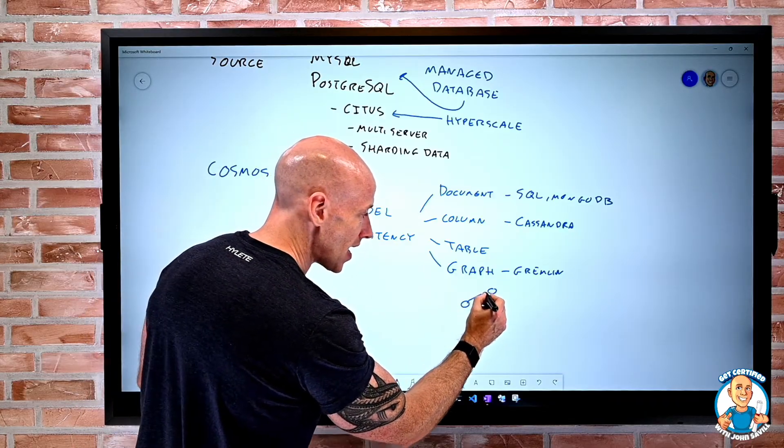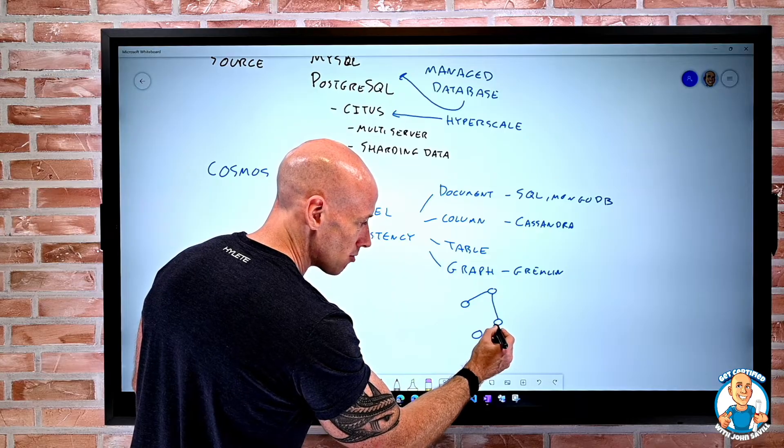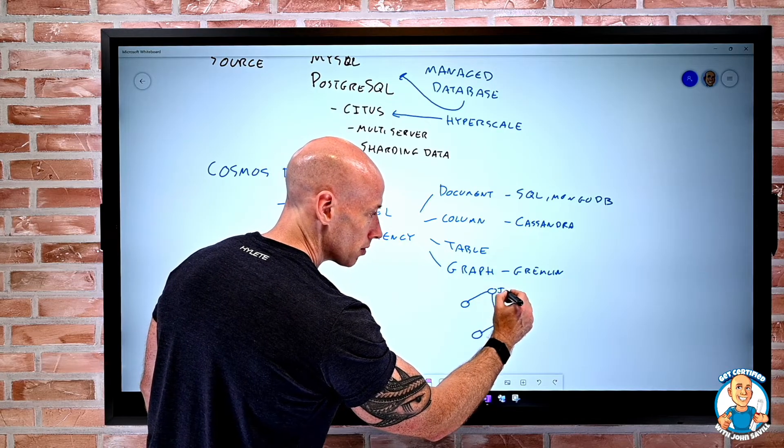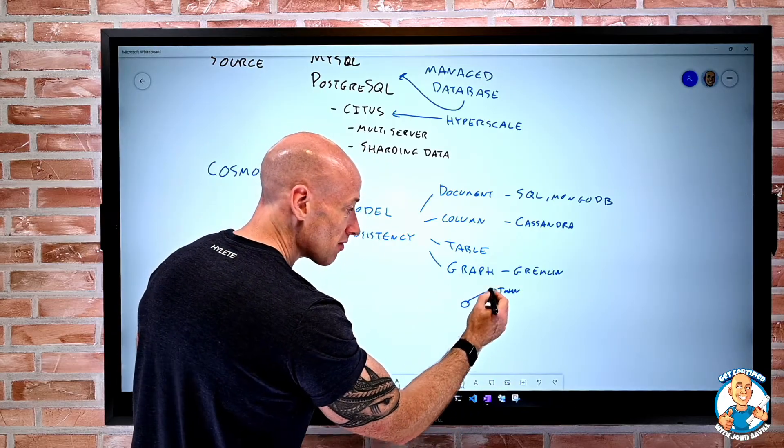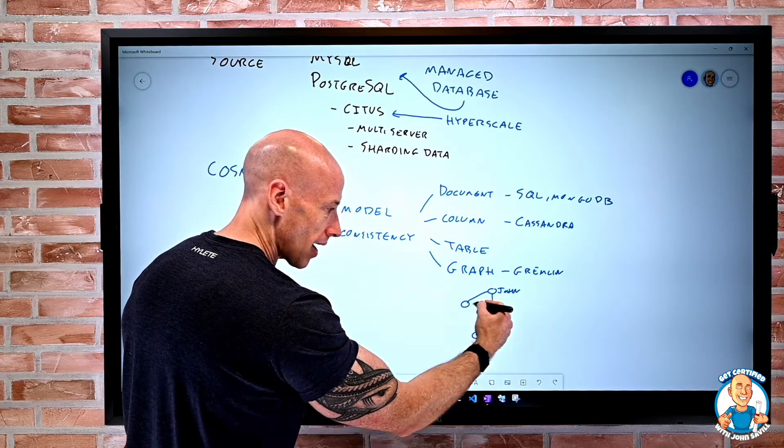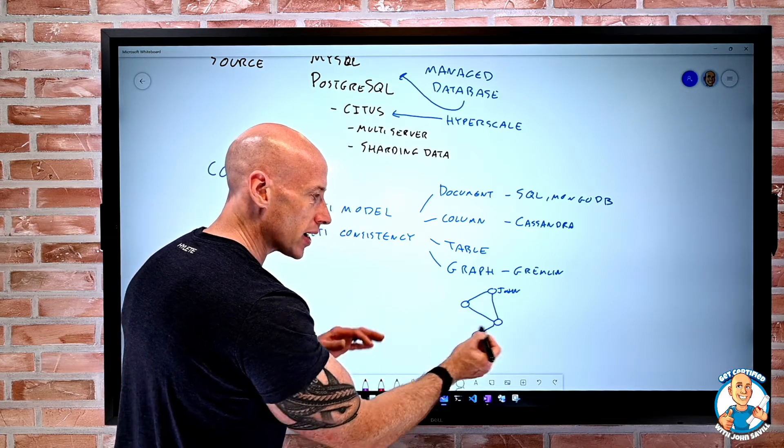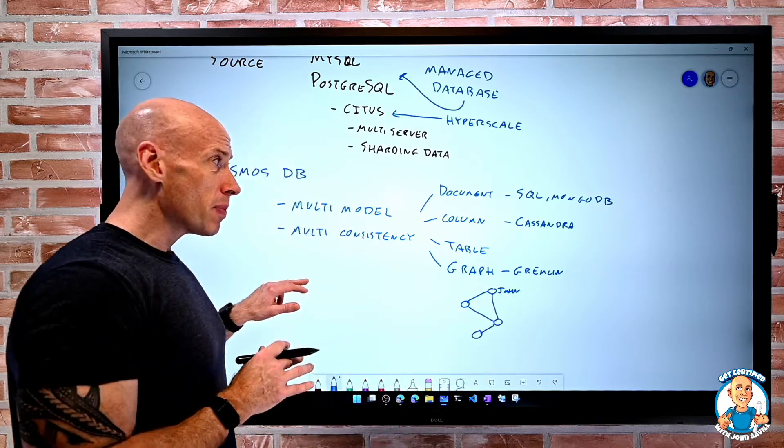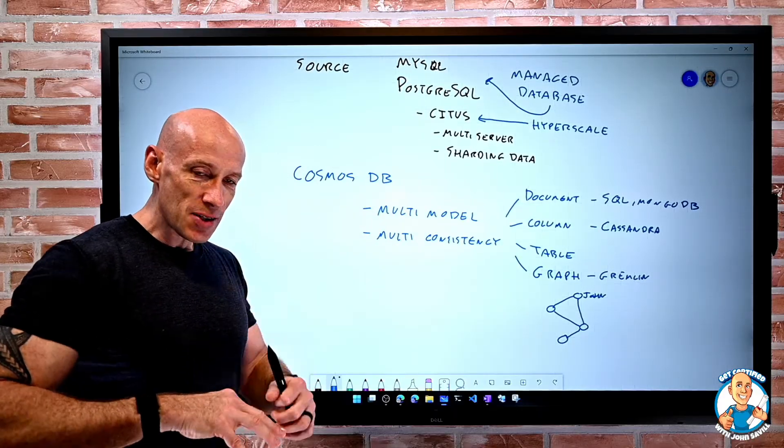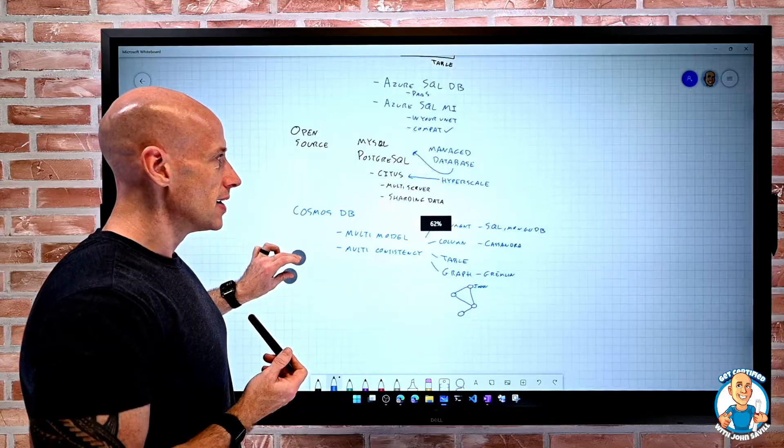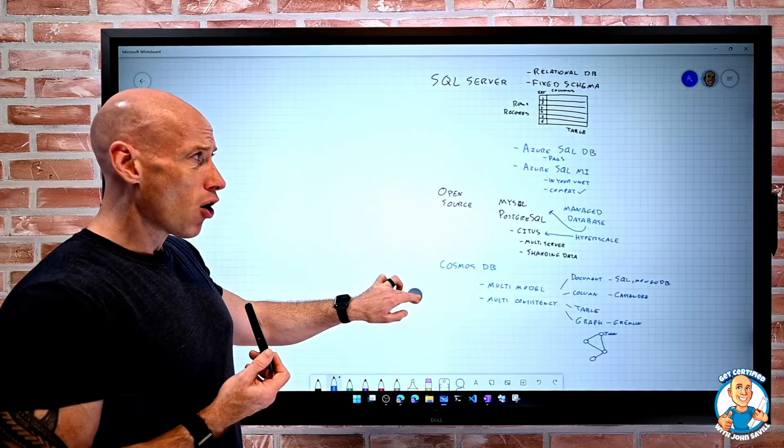So these could be nodes. These could be people. And then I have edges on how they relate to each other. So maybe this is John. And John could be the boss. And they have employees, other people here. So it's how I can define relationships between different things. So Cosmos DB supports all of those. It gives me a lot of flexibility in how I actually want to interact. And once again, there are other offerings in Azure. These are the key ones that are focused around AZ-900.